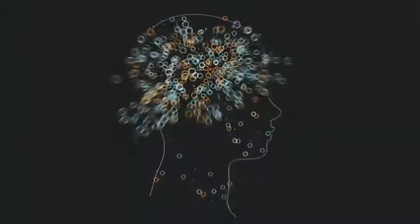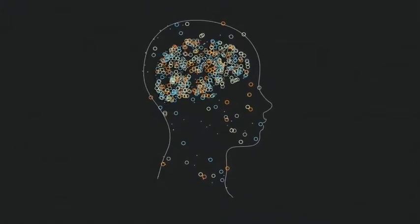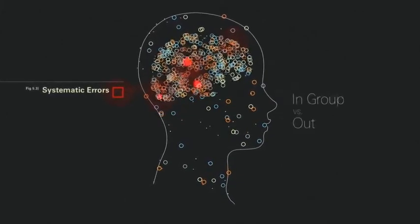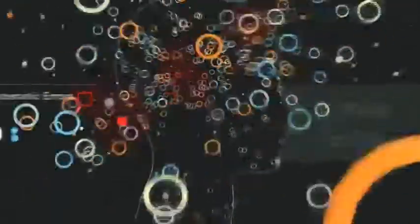When our brain is running in automatic mode, which is the majority of the time, we make systematic errors in how we evaluate or feel about in-group members as opposed to out-group members.